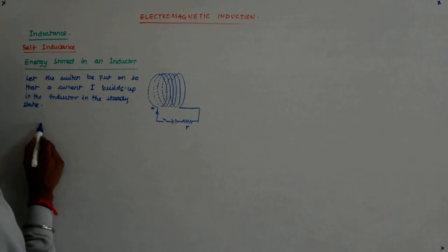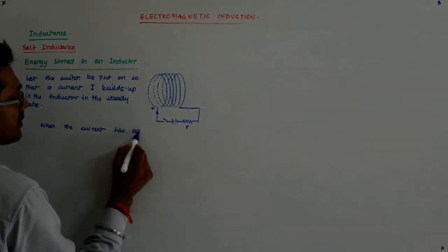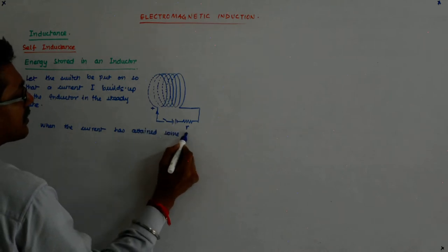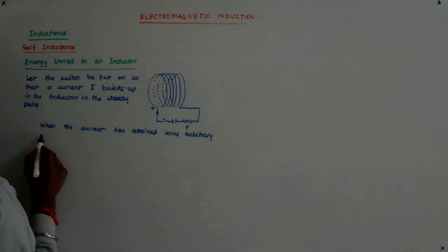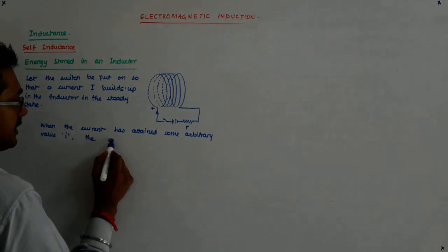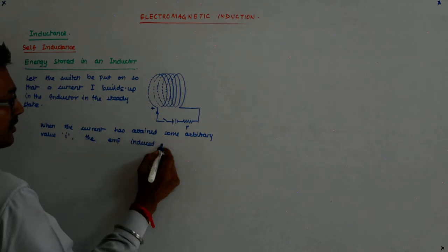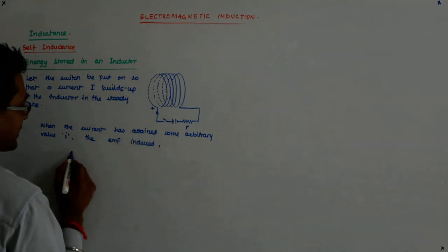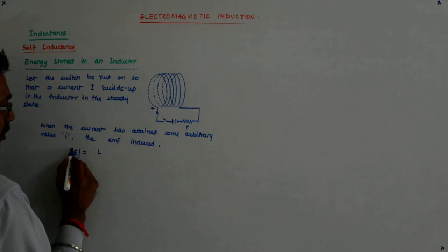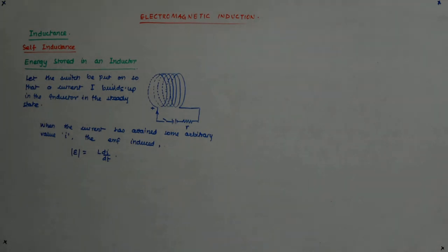When the current has attained some arbitrary value I, the EMF induced is equal to, the EMF induced, E is equal to mod of this is equal to LDI by DT. The magnitude is LDI by DT. So it is LDI by DT.